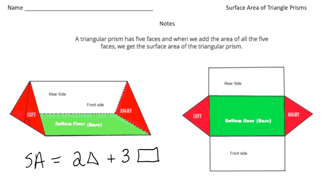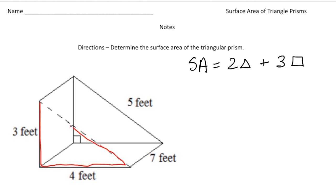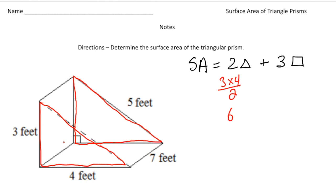Keep that in mind as we look at our first problem. Here we have a triangular prism, and again we need to get the surface area — the two triangles plus the three rectangles. Let's first focus just on the triangles. We have one triangle here, and that's going to be the same as the triangle on the other side — those are the bases of the triangular prism. We have a base of four and a height of three, so it's going to be three times four divided by two. Three times four is 12, and 12 divided by two is six. So the area of one triangle is six square feet.